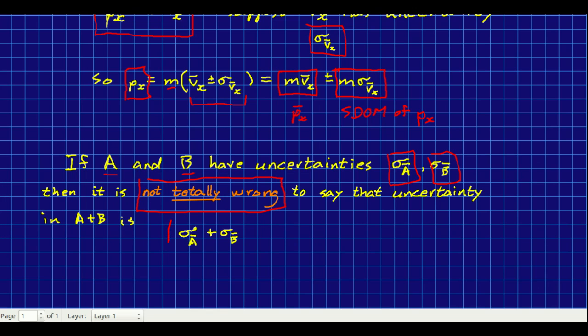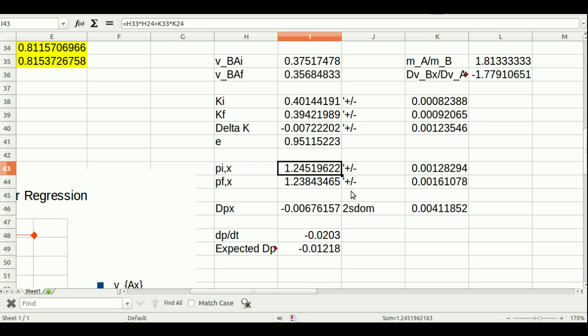I say it's not totally wrong because some of you will go on and take a stats course and learn to do it properly. This rule if you can call it a rule actually somewhat overestimates the uncertainty. That is more or less how I got these uncertainties in the momentums. If you now compare the difference in these momentums and those uncertainties you can actually see that we don't really have good agreement.